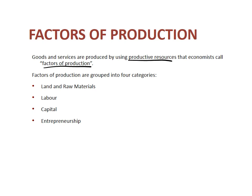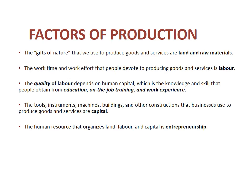There are four categories: you have your land and raw materials — some textbooks will just categorize this as land — then you have your labor, your capital, and entrepreneurship. Here is some detail into what these actually are.